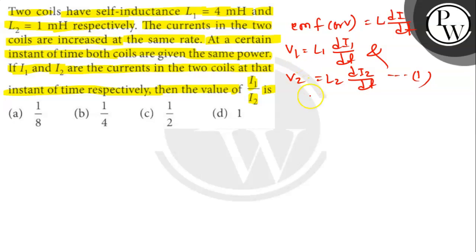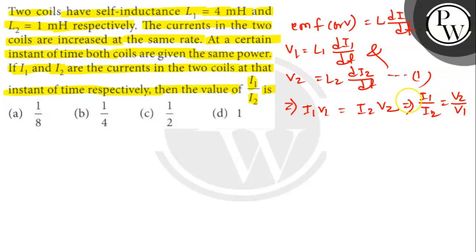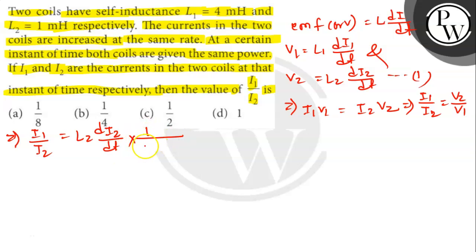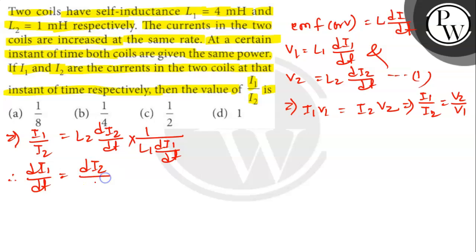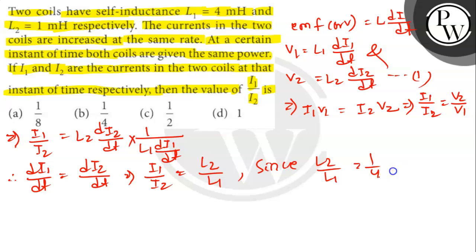Since equal power is given to both coils, that implies I1·V1 equals I2·V2, which can be written as I1 by I2 equals V2 by V1. From equation 1 we get I1 by I2 equals L2 times di2 by dt divided by L1 times di1 by dt. Since it is given that current in both coils is increased at the same rate, di1 by dt equals di2 by dt. That implies I1 by I2 equals L2 by L1. Since L2 by L1 equals 1 by 4, we have I1 by I2 equals 1 by 4.